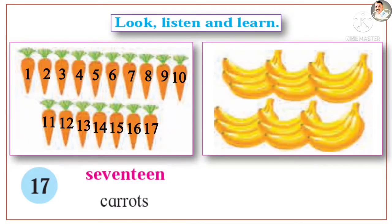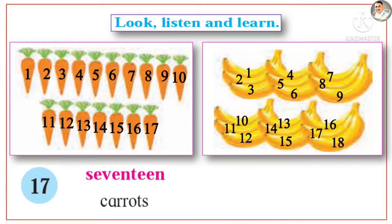How many bananas are there? 18. Eighteen. E-I-G-H-T-E-E-N. 18 bananas.